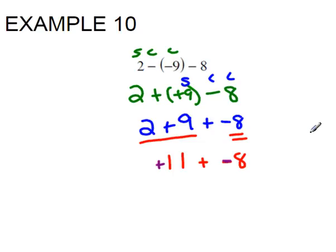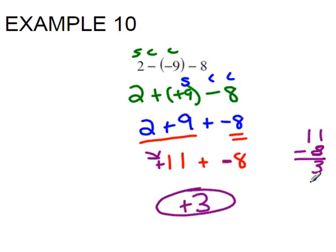That means I'm really going to subtract my numbers. So we're taking 11 minus 8, which is 3. And then we want to keep the sign of the larger number, which is the 11, so it's positive.